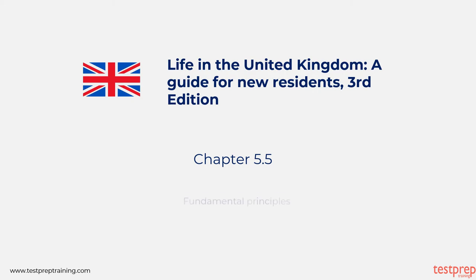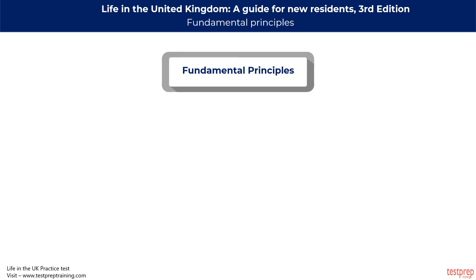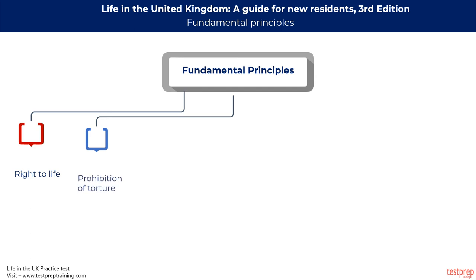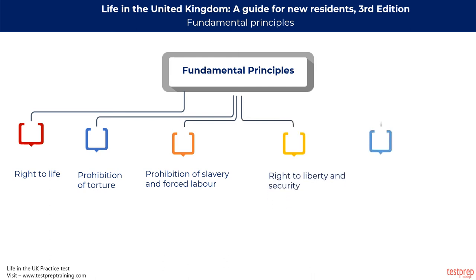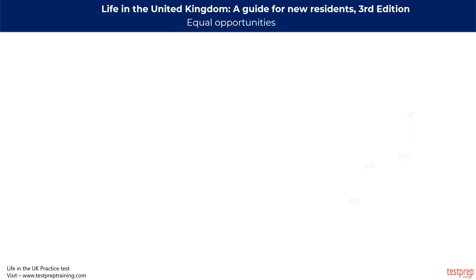Britain has a long history of respecting individual rights and ensuring essential freedoms, with roots in Magna Carta, the Habeas Corpus Act, and the Bill of Rights of 1689. British diplomats and lawyers had an important role in drafting the European Convention on Human Rights and Fundamental Freedoms, and the UK was one of the first countries to sign in 1950. Principles included in the Convention are: the right to life, prohibition of torture, prohibition of slavery and forced labor, right to liberty and security, right to a fair trial, and freedom of thought, conscience, and religion. UK laws also ensure that people are not treated unfairly because of their age, disability, sex, pregnancy and maternity, race, religion or belief, or sexuality or marital status.